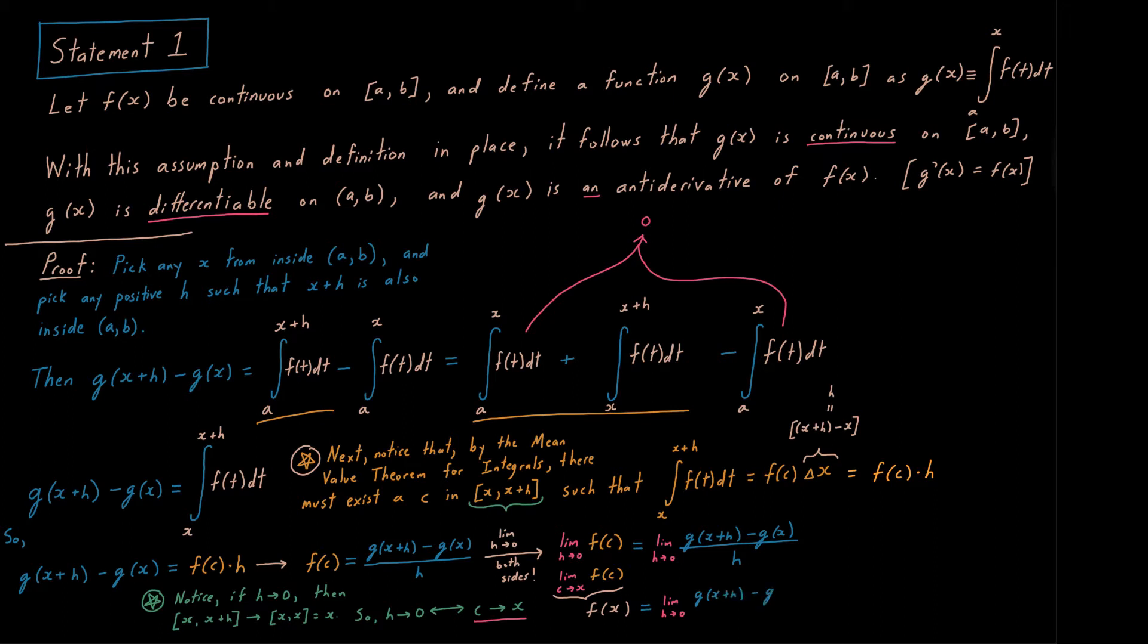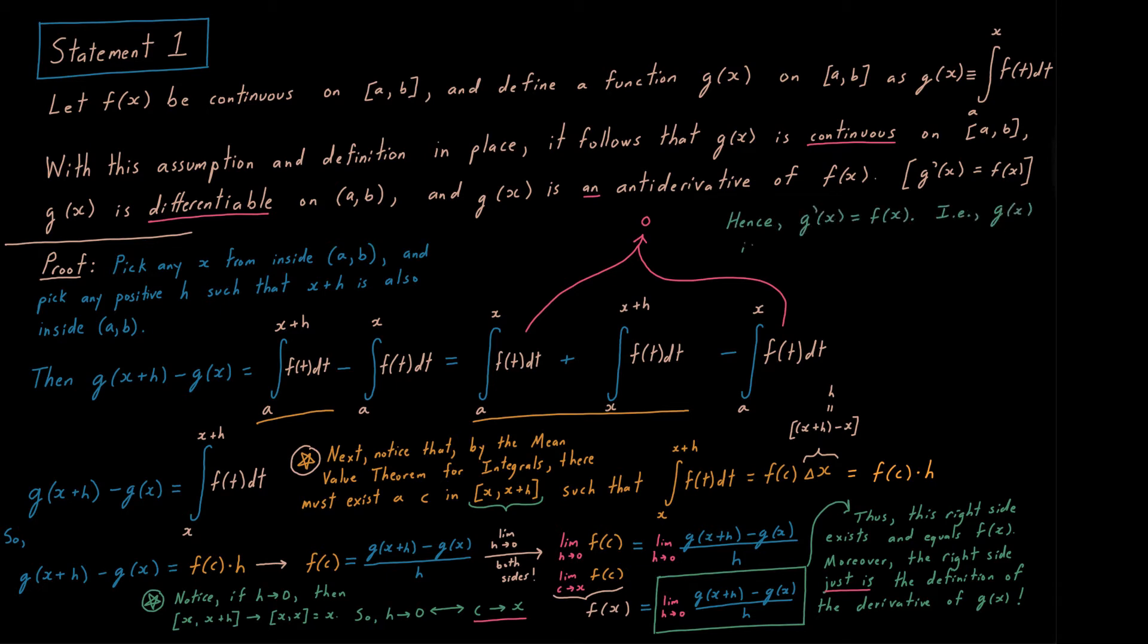That is our left side. And the left side exists, which means the right side exists. And the right side is the definition, the very definition of the derivative of g. And once again, it exists because we showed that the left side exists. So the derivative of g exists. We have just shown that g is differentiable. And we've also shown that g is an anti-derivative of f because g prime equals f.